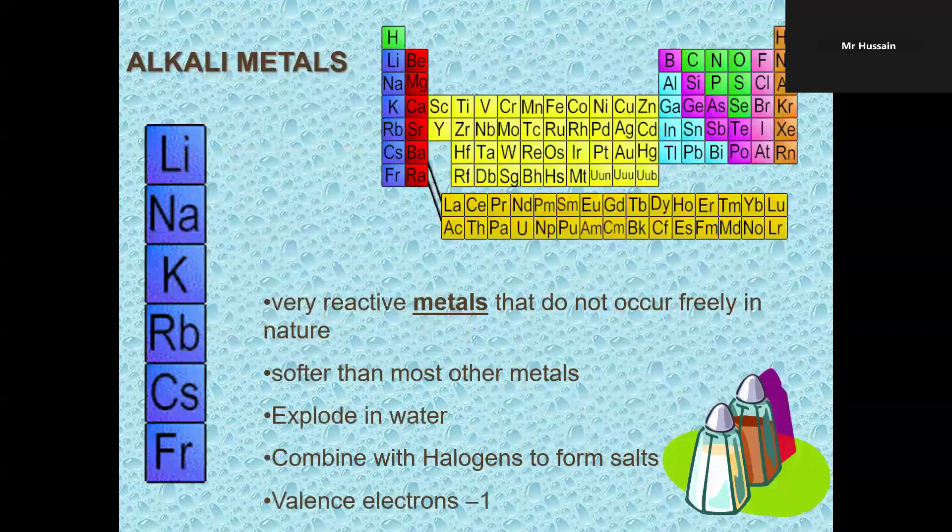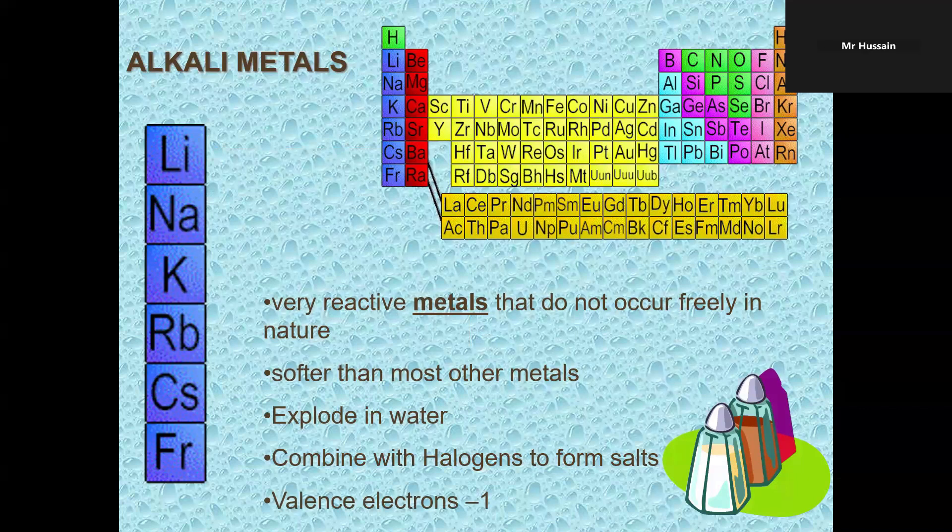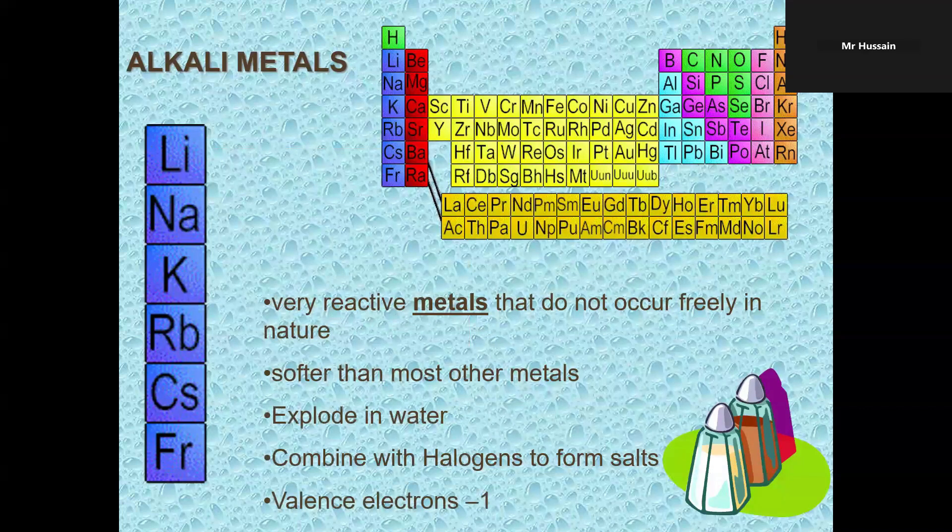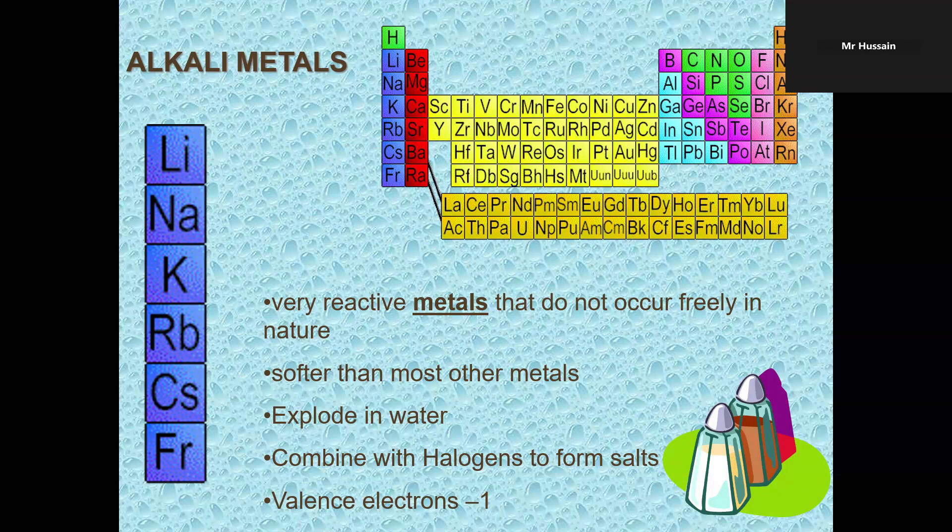Group one, below hydrogen, starting from lithium until francium. They are very reactive metals that do not occur freely in nature. They are soft, so soft you can cut them with an ordinary knife. They explode when they come in contact with water. They combine with halogens to form salts. Alkali metals, elements of group one, have one valence electron.